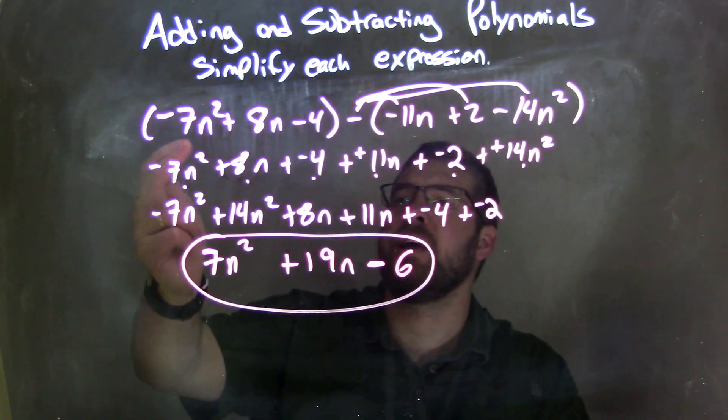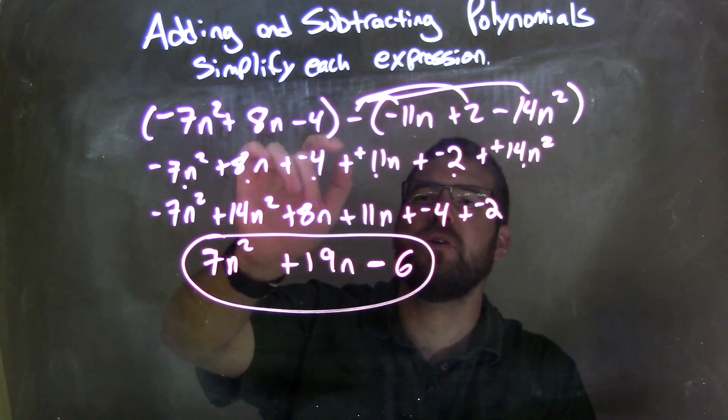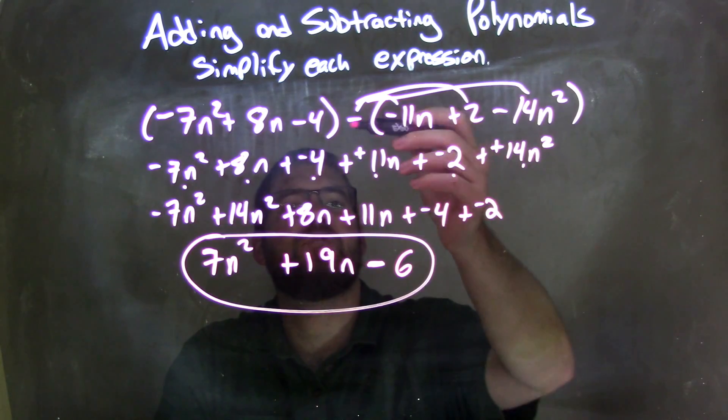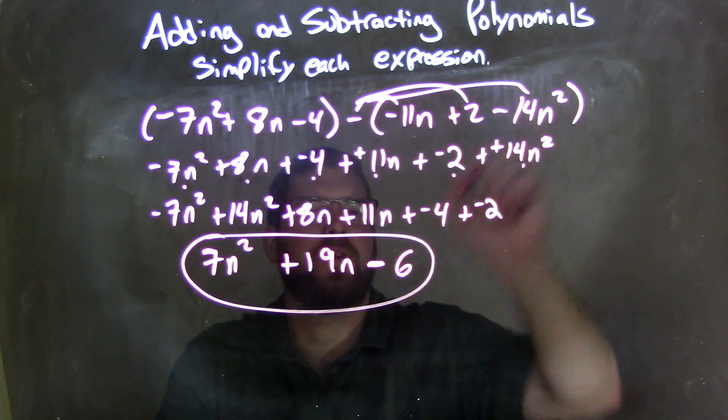So let's recap. We're given negative 7n squared plus 8n minus 4, parentheses minus parentheses, negative 11n plus 2 minus 14n squared. I made everything to be added as a negative, and I distributed the subtraction sign to all parts here on the right, all three of them.